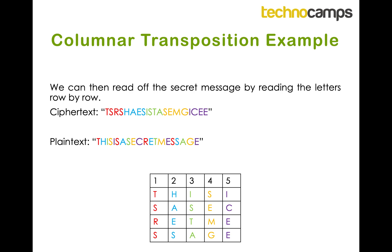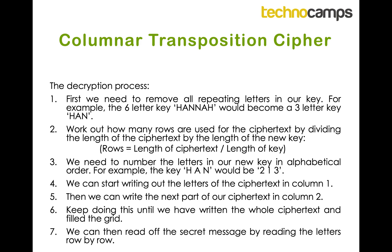This is one way of doing columnar transposition ciphers using a key that is a number. If you go to the worksheet below you can have a go at some ciphers like this. There is a second part which uses a key that is a word instead of a number. You can pause the video now, have a go at the first few, then come back and we'll continue with how to do the second part.